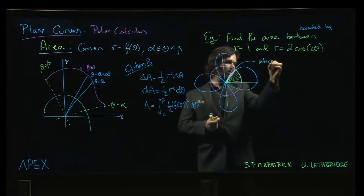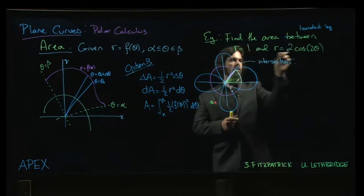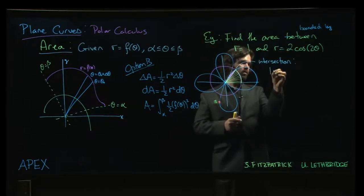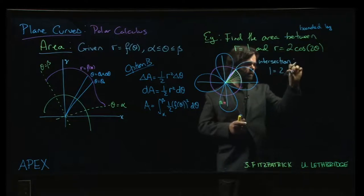Alright. So let's see. What is the intersection? Well, when those two curves are equal, that's where the intersection is going to take place. Sorry, not sine. Cosine.